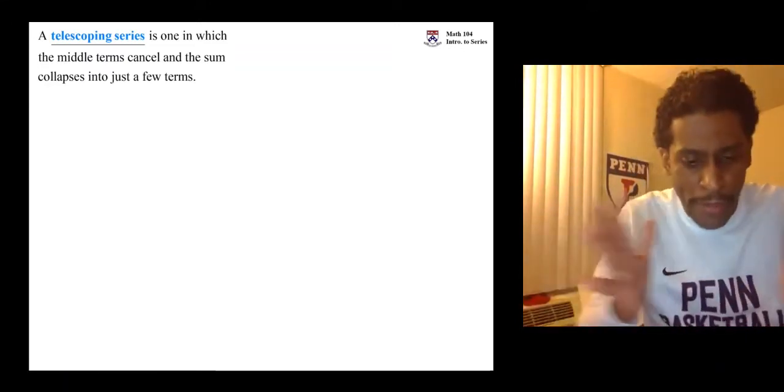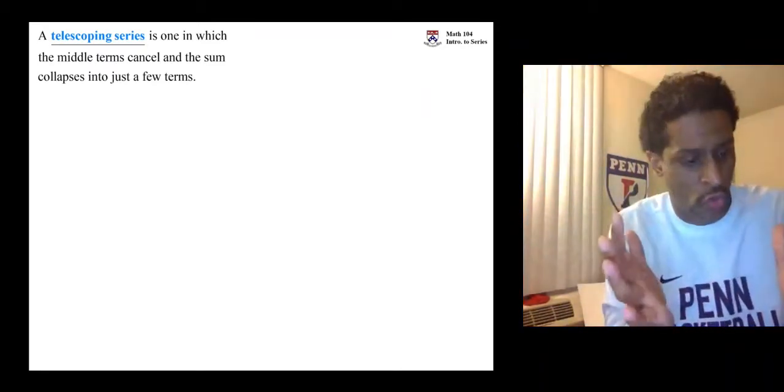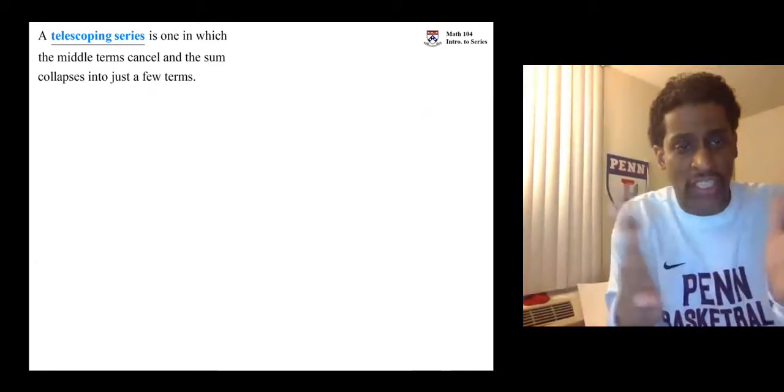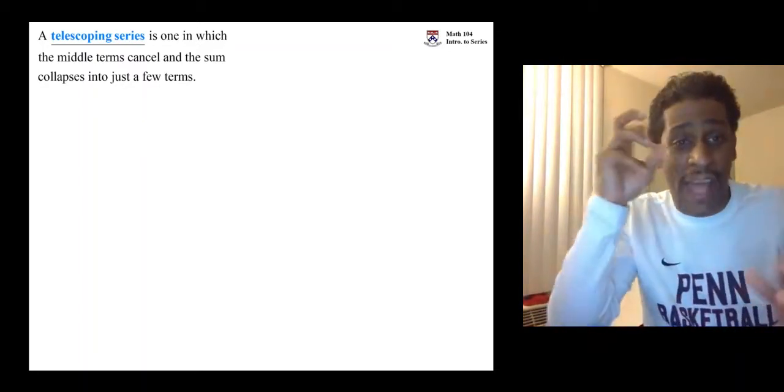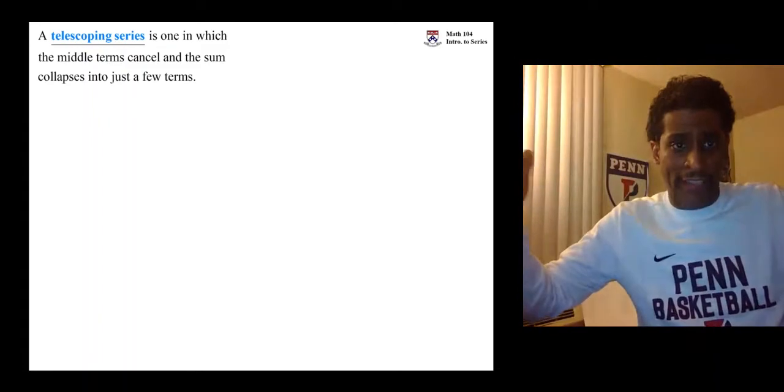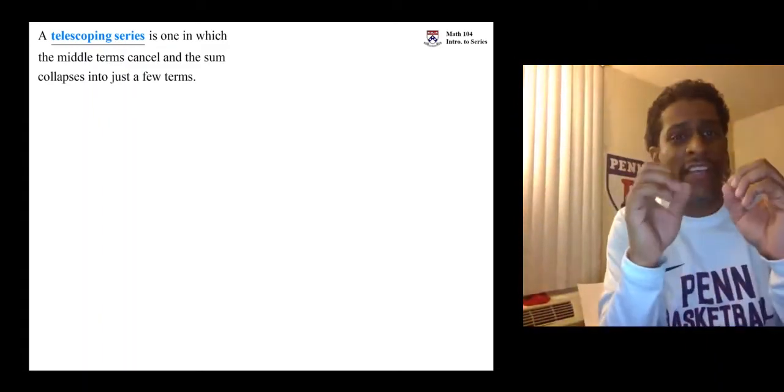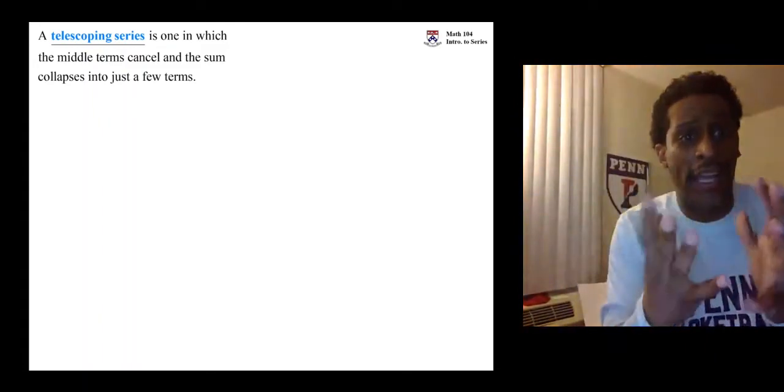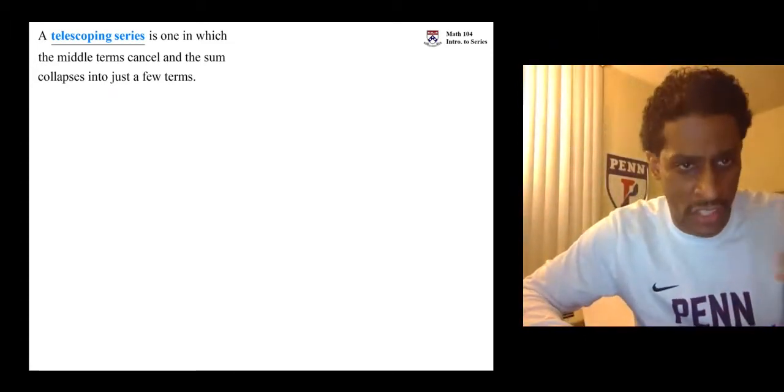It's one in which the middle terms cancel and the sum collapses much like a telescope does. You have the eyepiece and you have the lens and you extend it and then you can contract it and all the middle parts go away. Thus the name telescoping series.